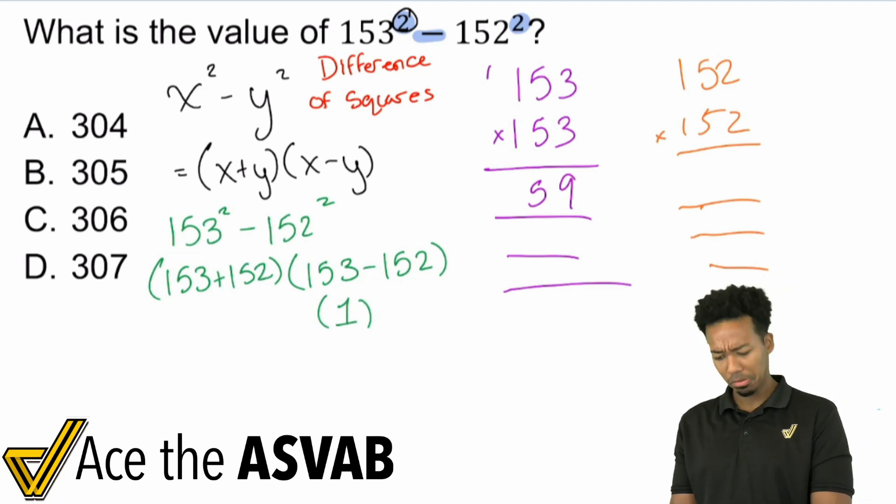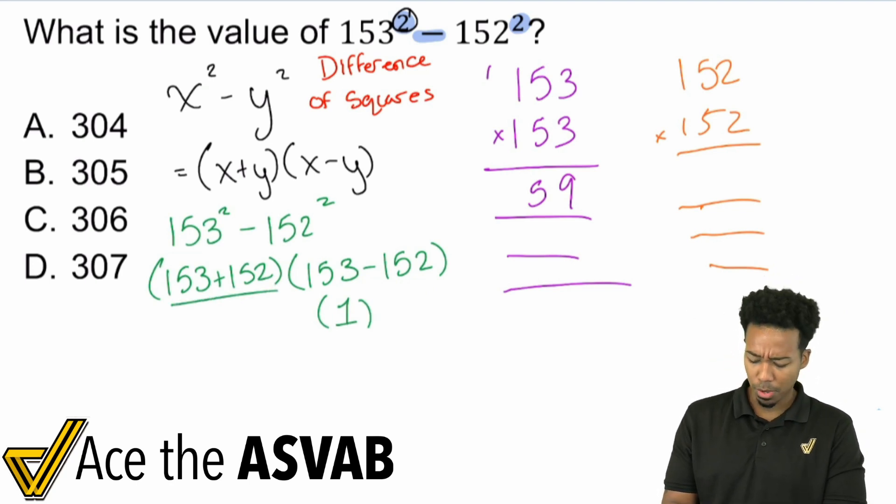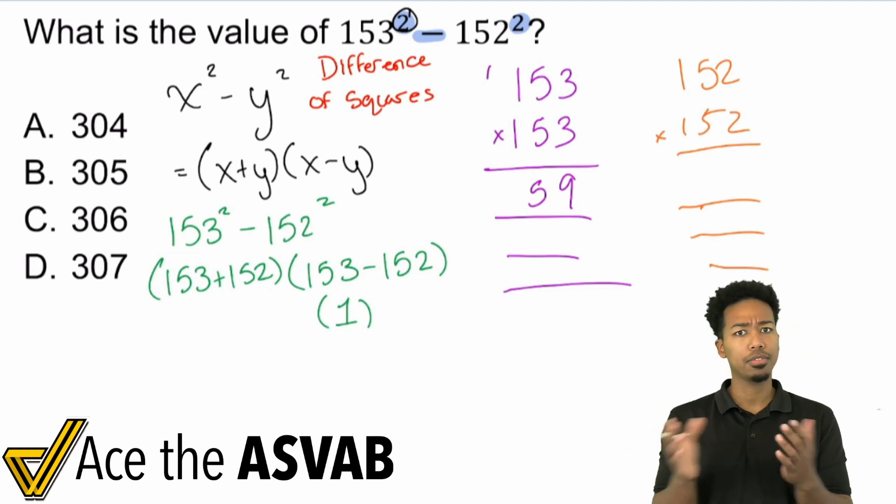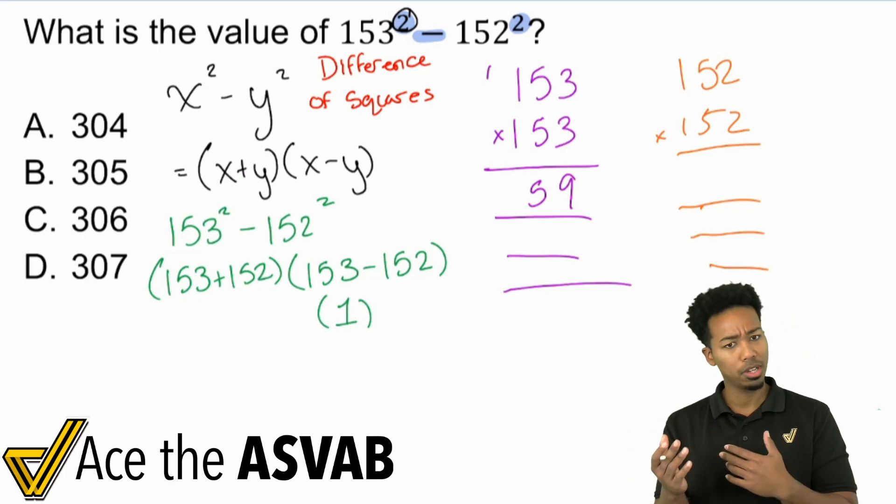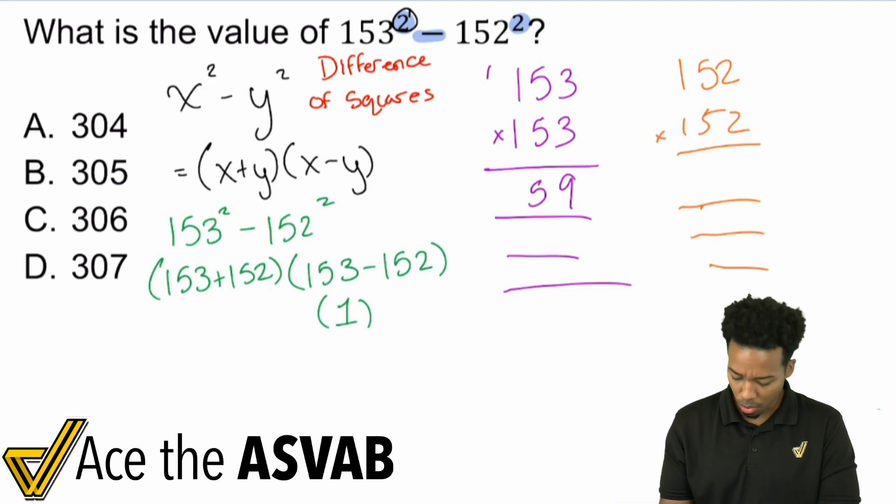Okay. Cool. That's pretty good. And then 153 plus 152, well, 150 and 150 is 300. Three plus two, that's going to be five. Okay. Sounds good. So that's going to be 305.